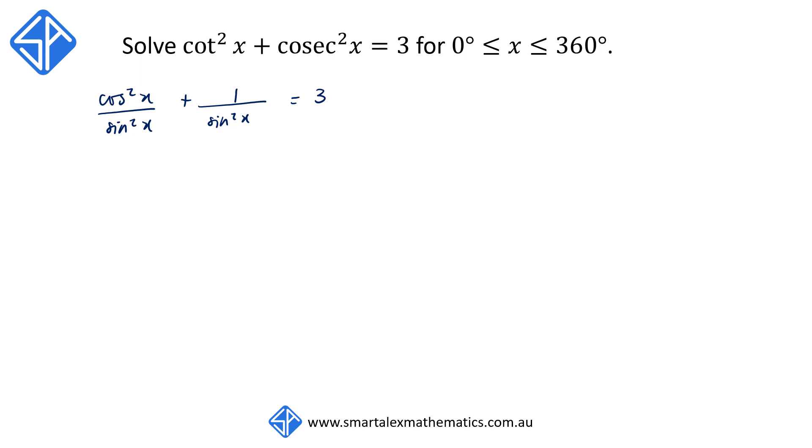What we notice is we have a common denominator of sine squared x. So we can combine it into a single fraction, cos squared x plus 1 over sine squared x is equal to 3. Just note that sine x cannot be equal to 0.